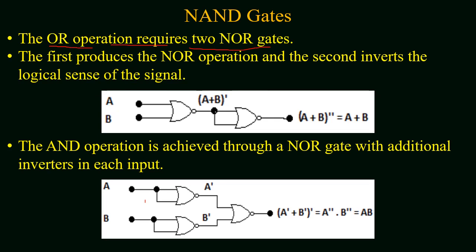The OR operation requires two NOR gates. The first produces the NOR operation: for inputs A and B, it gives (A + B)'. The output of the first NOR gate is applied as input to a second NOR gate, giving (A + B)''. The double prime cancels, and the result is A + B — the OR operation.